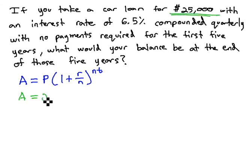It starts out as a $25,000 loan times 1 plus r. R is the interest rate, 6.5. 25,000 was P. 6.5 written as a decimal. Remember that means we have to move the decimal twice.